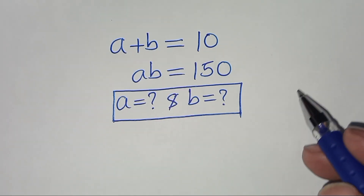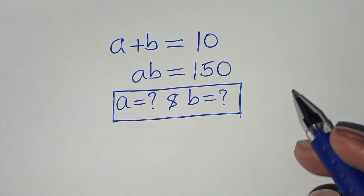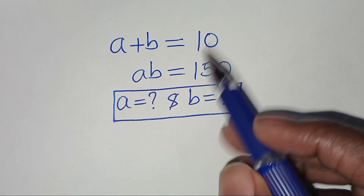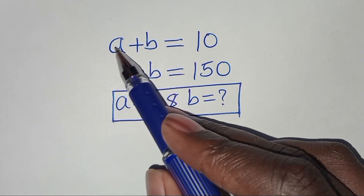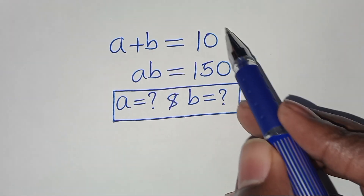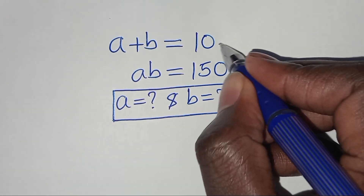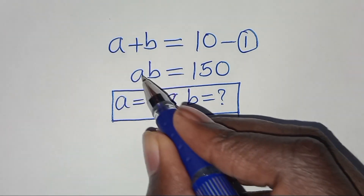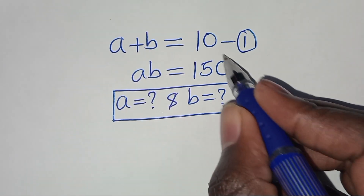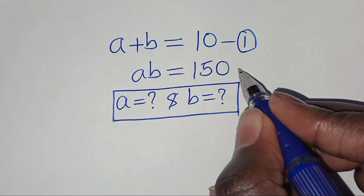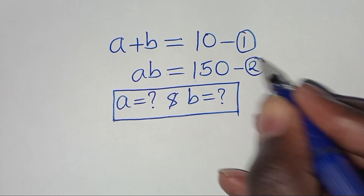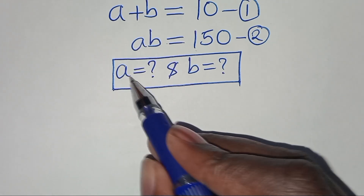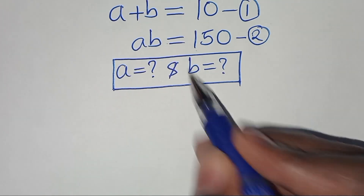Hello everyone, you are welcome to solve this nice algebra problem. We have a plus b equals 10 — let's call this equation 1. And a times b equals 150 — let's call this equation 2. So what is the value of a and what is the value of b?